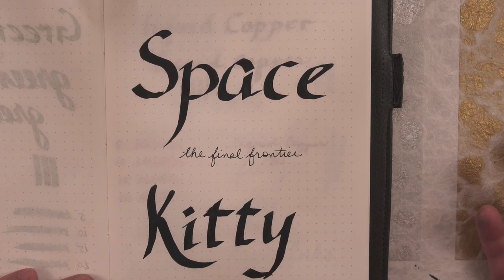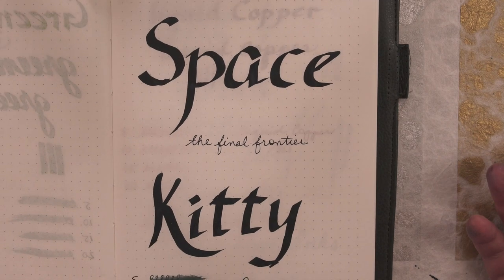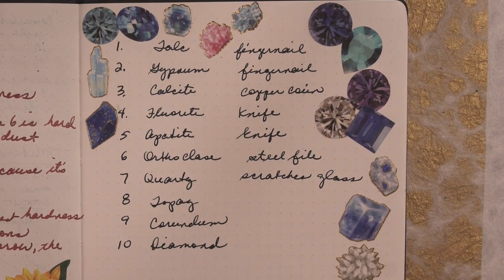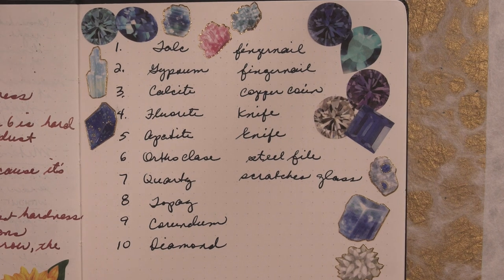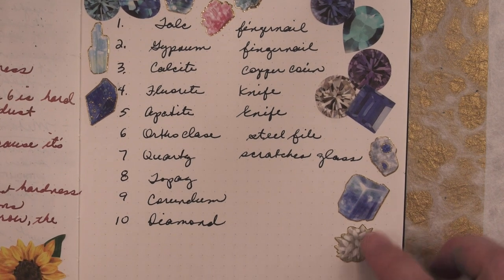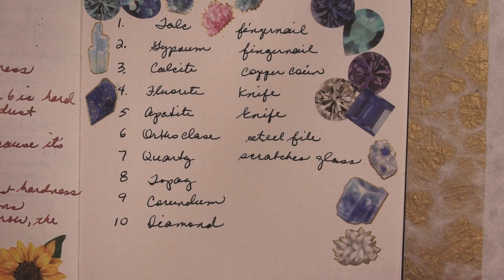Here it is with the Pilot Parallel 6.0. Here it is with everyday writing. This is done with a medium nib. It's a nice saturated ink that you could possibly use in a business situation.